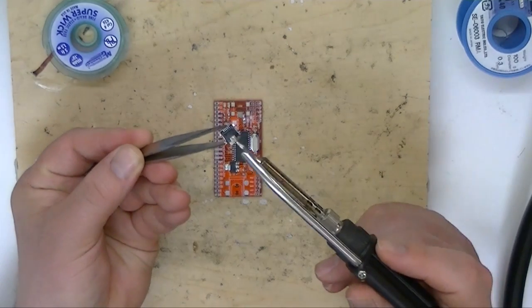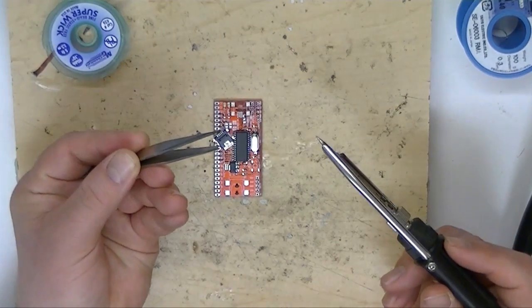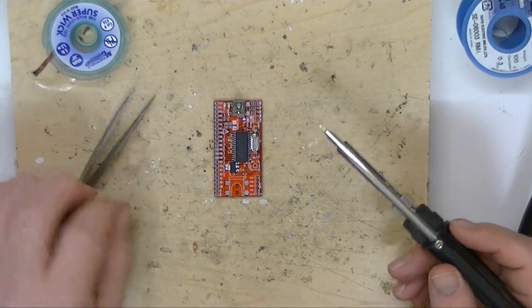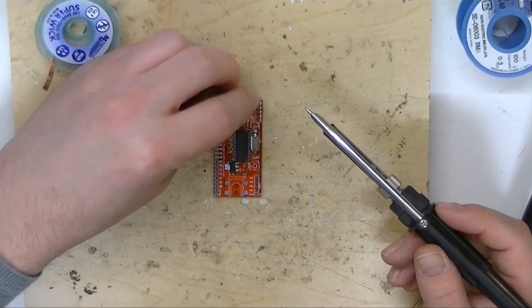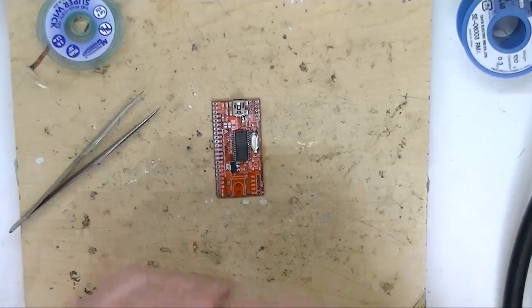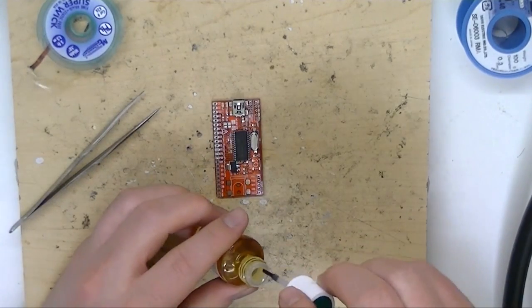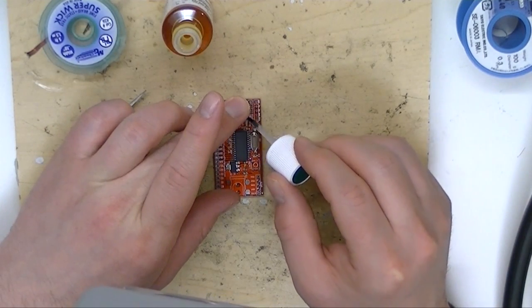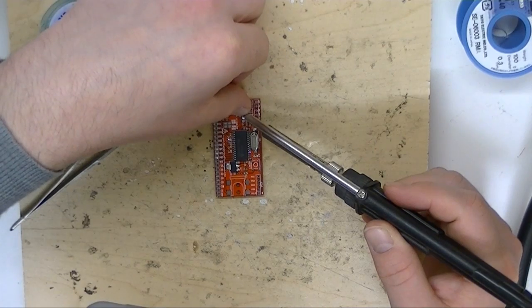USB jacks have these little pegs on the bottom. And that helps center them where they're supposed to go. It can still be kind of trying to get these soldered. I'm going to add just a little bit of flux.